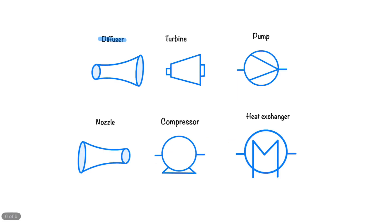We will be looking at the following process devices: nozzles and diffusers, turbines, pumps and compressors, and heat exchangers.